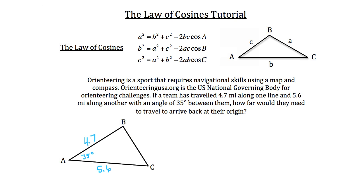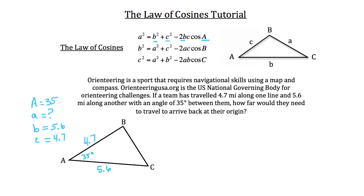We know angle A is 35 degrees. We don't know side length a, but that's what we're solving for because it's directly across from angle A. We do know side length b has a value of 5.6 miles, and side length c has a value of 4.7 miles. So we have angle A and side lengths b and c, and we're solving for side length a — so we're going to use the top formula.